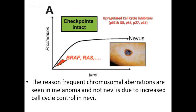The reason frequent chromosomal aberrations are seen in melanoma and not in nevi is due to increased cell cycle control in nevi. You get an initiating driver mutation — say BRAF or NRAS — cells divide and the tumor grows to a certain size, but importantly, tumor suppressor mechanisms kick in: upregulation of P53, RB, P16. That causes the cells to stop dividing and mature — that's how you have a nevus. A benign tumor grows to a certain size and stops. If it doesn't stop and keeps growing, it's malignant.